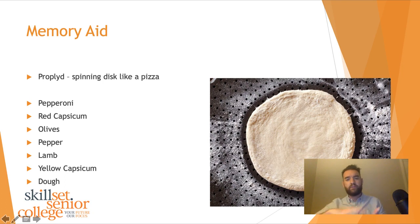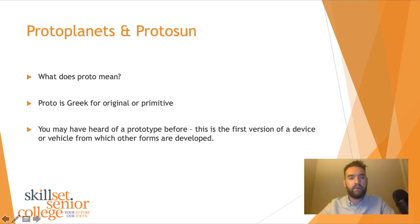I used the term proto sun before. So what does that mean? We need to look at proto first because we probably know what sun means and planet means. We can also talk about proto planets. What does proto mean? Proto is Greek for original or primitive. You may have heard of a prototype before. This is the first version of a device or vehicle from which other forms are developed. When we're talking about that, we apply that to planets and suns. A protoplanet is the original planet that the planet may form from.